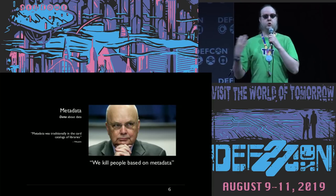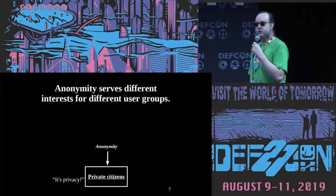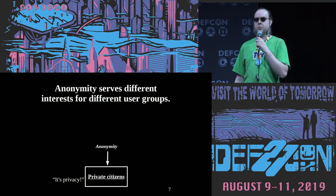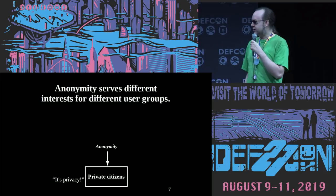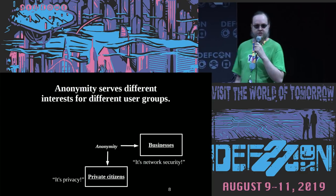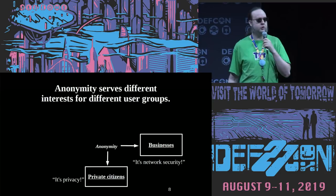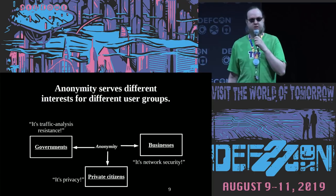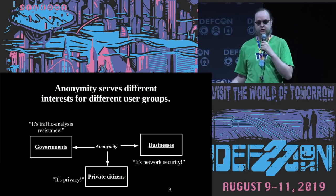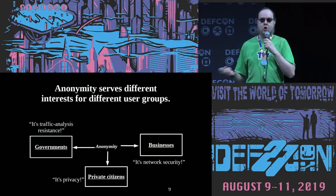We try to protect who's talking to who, what websites you're going to, where you are in the world when you're using the internet. I actually only use the word 'anonymity' when talking to other researchers. When talking to my parents, I tell them I'm working on a privacy system because privacy is a good American value. When talking to companies, I say communication security or network security because I hear 'privacy is dead.' When talking to governments, I work on traffic analysis resistant communication networks. It's the same system, same security properties, same users — but they're using it for different reasons.